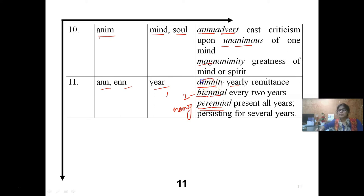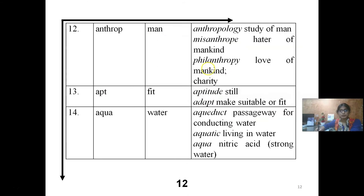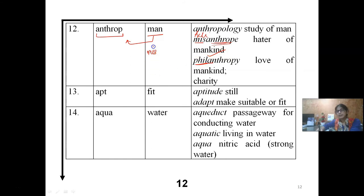ANTHROP means 'man.' ANTHROPOLOGY is the study of mankind. MISANTHROP — MIS means bad or hate, ANTHROP means mankind — a hater of mankind. PHILANTHROP — PHILA means love, ANTHROP means mankind — a person who loves mankind. So MIS means hate/bad and PHILA means love — misanthrope hates mankind, philanthrope loves mankind.